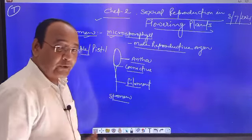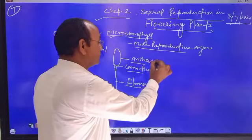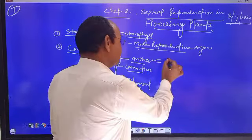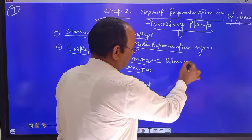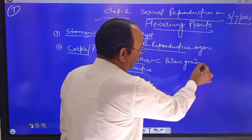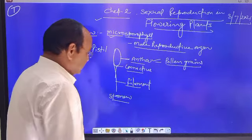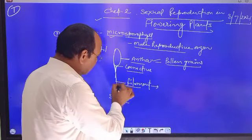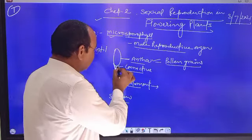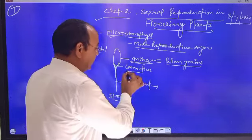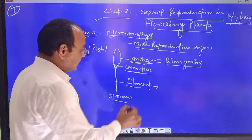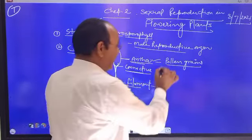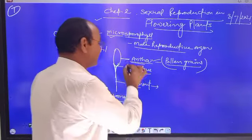The most important part of stamen is anther, because especially in the anther, pollen grains dwell. The filament is a long tubular or cylindrical structure which connects with the anther. The connective is an intermediate part of stamen which interconnects the filament and anther. The anther is the topmost part of stamen where pollen grains dwell.